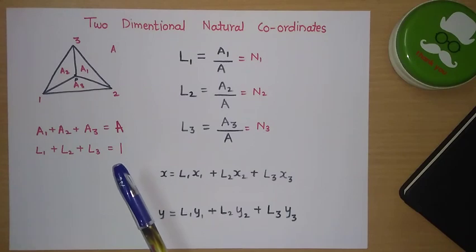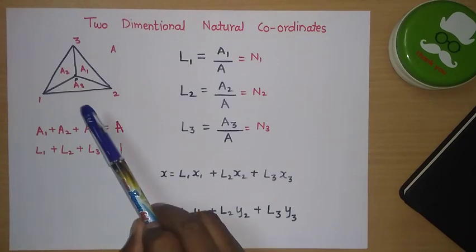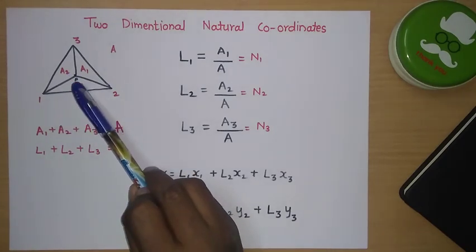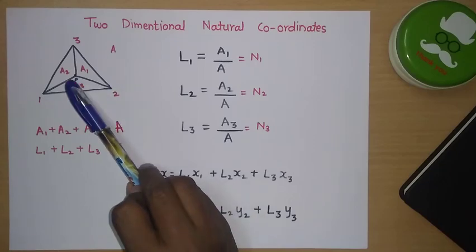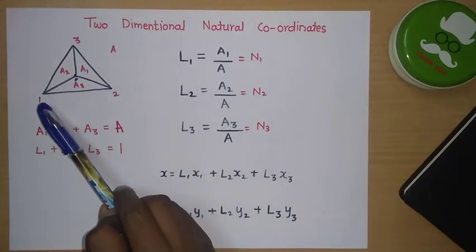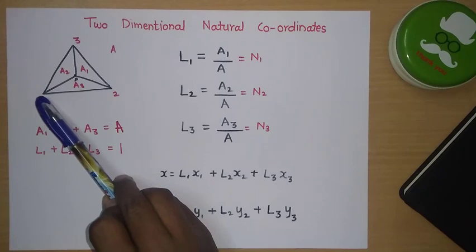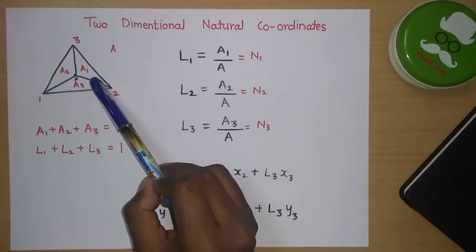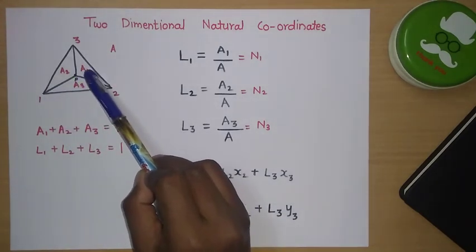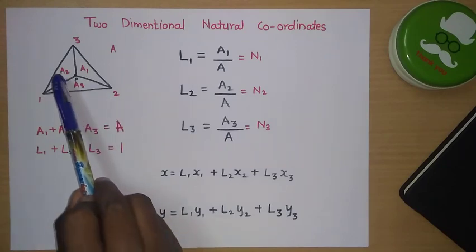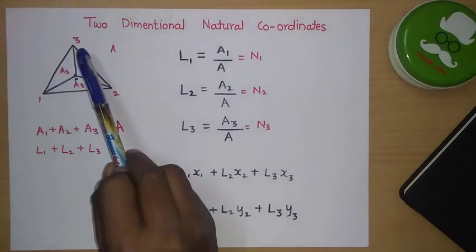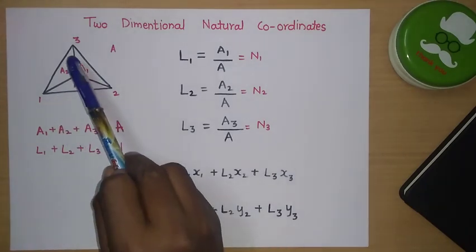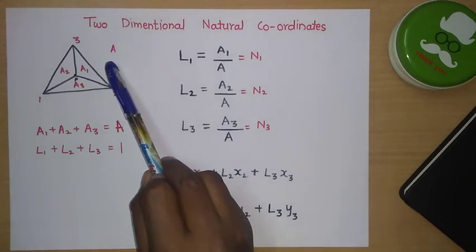In the natural coordinate system for two dimensions, we take a point P within the triangular element and join this point to all three nodes. For node 1, the opposite triangle area is called A1. For node 2, the opposite triangle area is called A2. Similarly, for node 3, the opposite triangle area is called A3. The total area of the triangle is capital A.